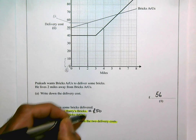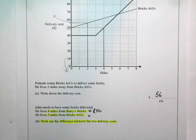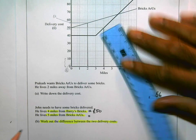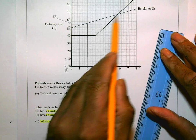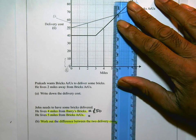And from Bricks Are Us, he lives five miles away. So I'm going to draw a line up from five miles. But I'm going to this thin line here, which is Bricks Are Us. So take that all the way up.